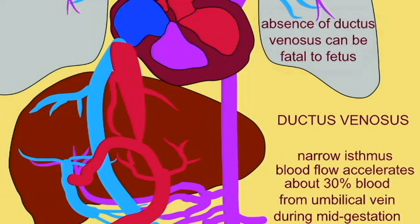It is possible for a fetus to survive development without a ductus venosus. This sometimes occurs, although the absence of a ductus venosus can also be a cause of fetal death.